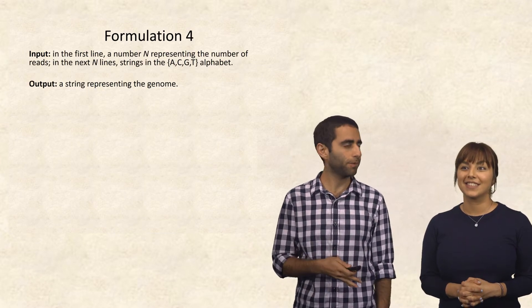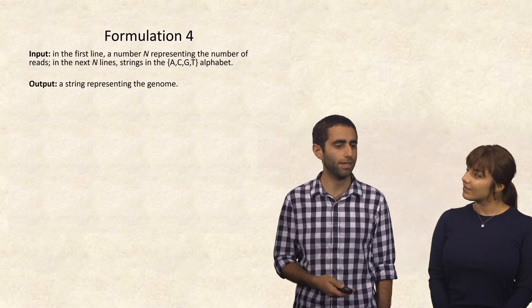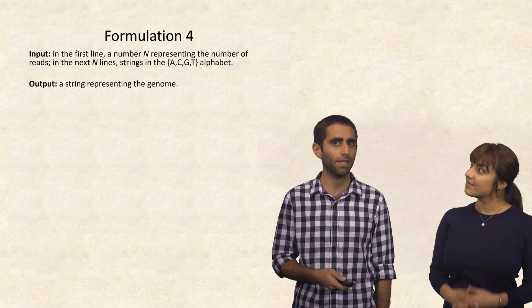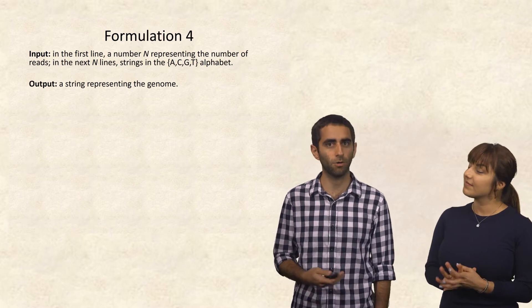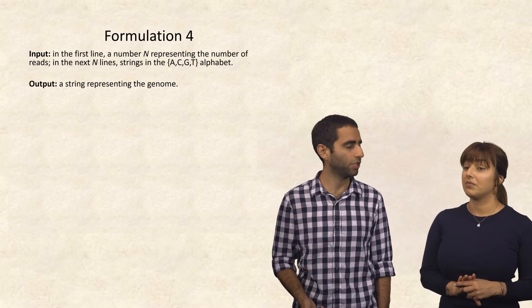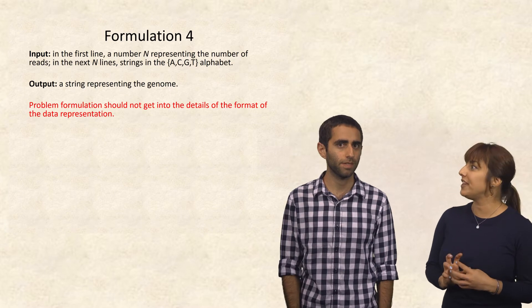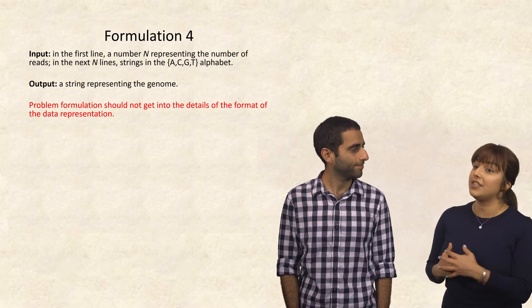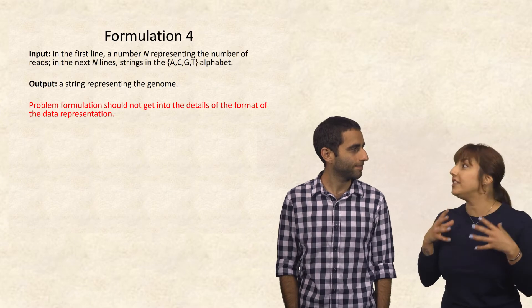So what about if the input, the first line is some integer n, and then the remaining n lines are sequences, strings, in the ACGT alphabet that are my reads? And then the output is a string representing the genome. Problem formulation should be independent of implementation. So you should not get into the details of the format of the data representation.